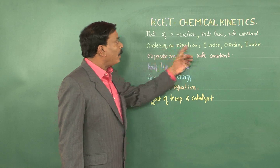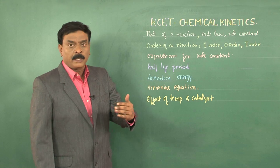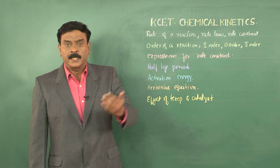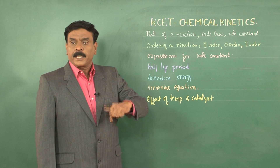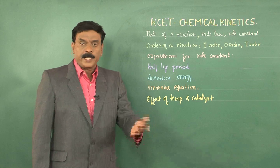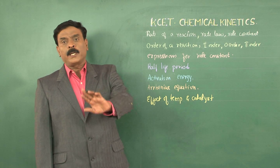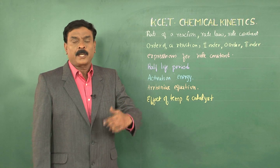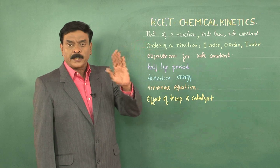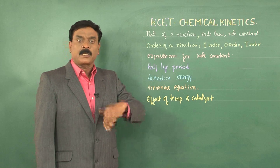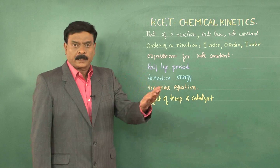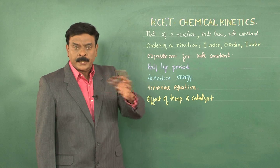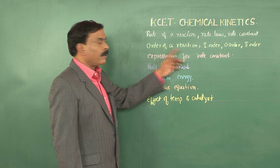Coming to order of a reaction: in a reaction you may have two or more reactant molecules, but it so happens that in some reactions the rate will depend on the concentrations of all the reactants, whereas in some it may depend only on a few. The order of a reaction tells us whether the rate depends on the concentrations of all the reactants or only a few, and to what power. When concentration changes, how the rate changes is indicated by the order of a reaction.